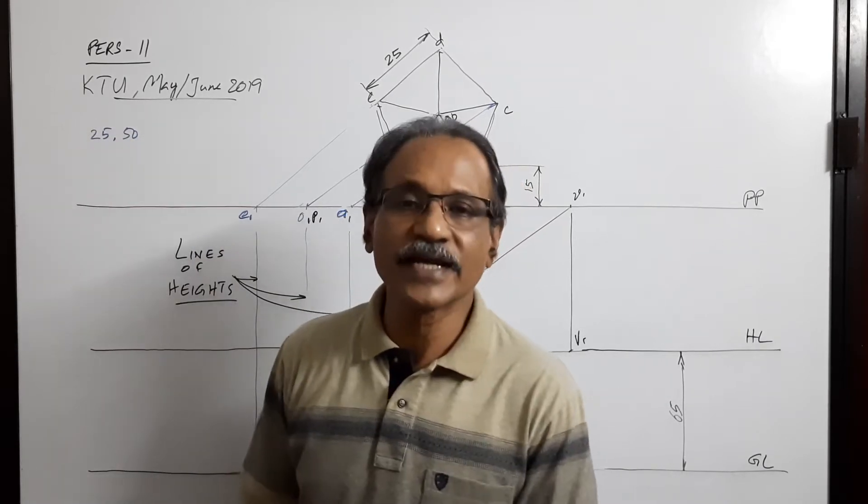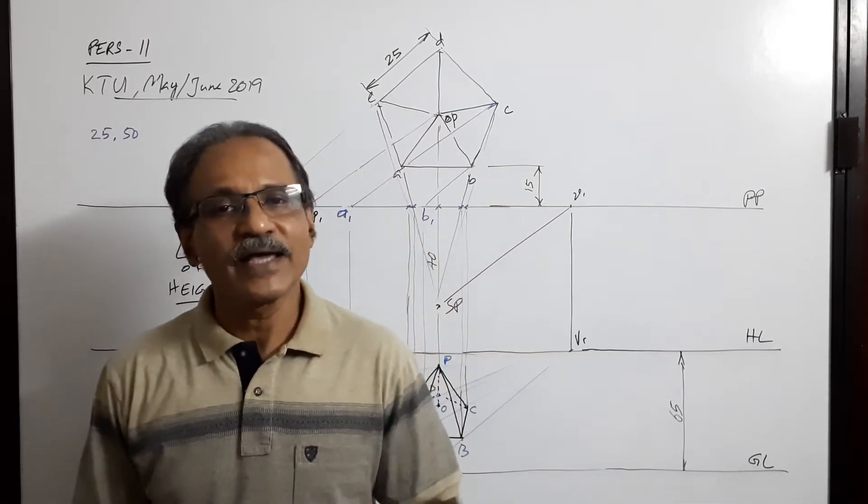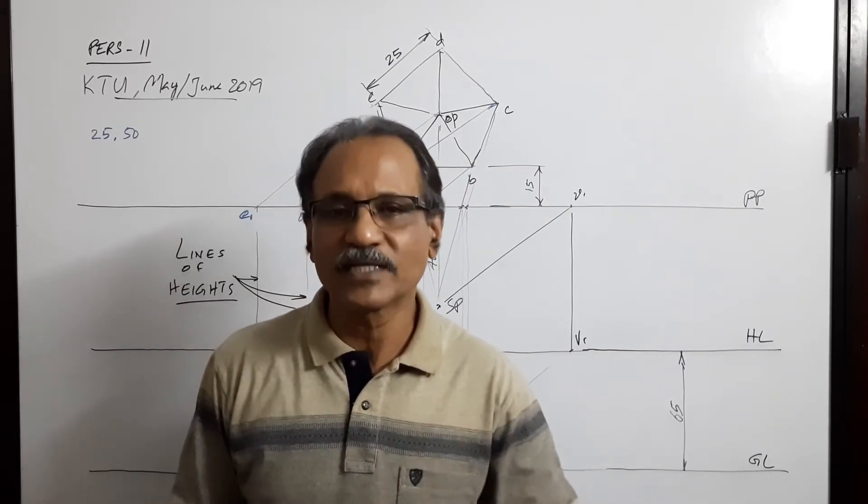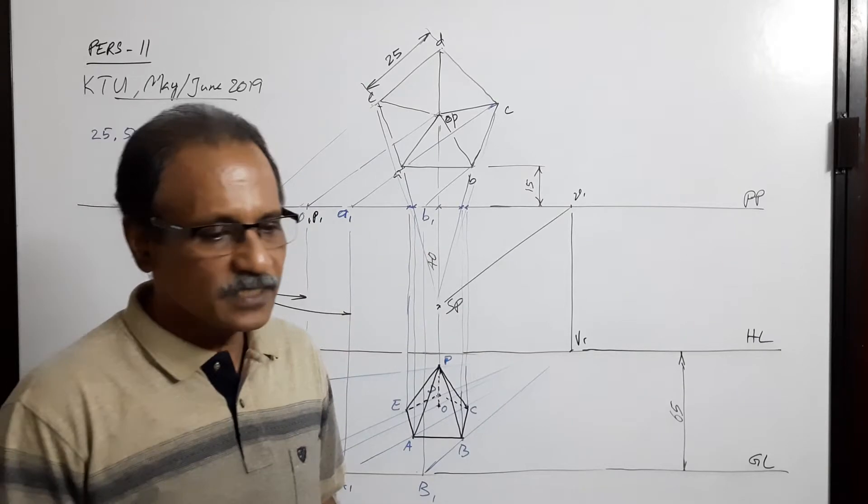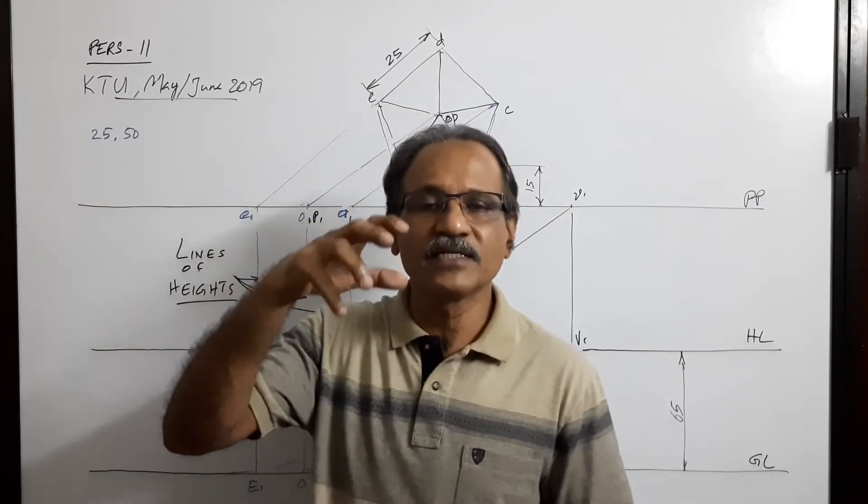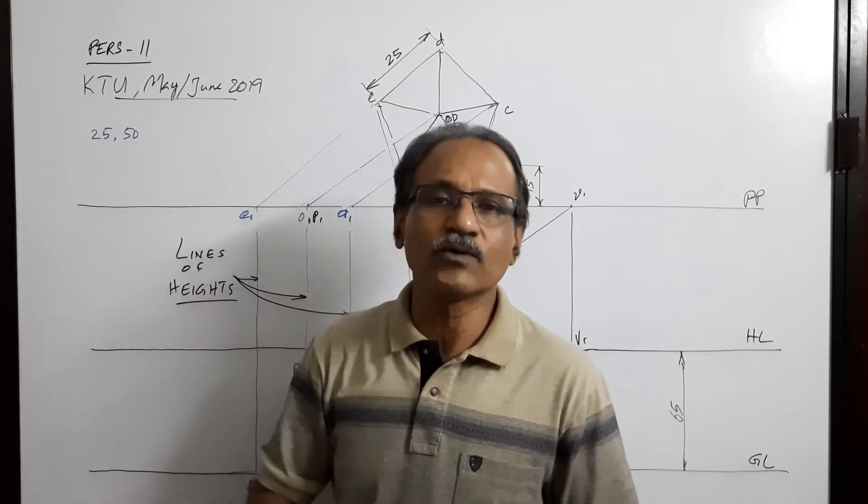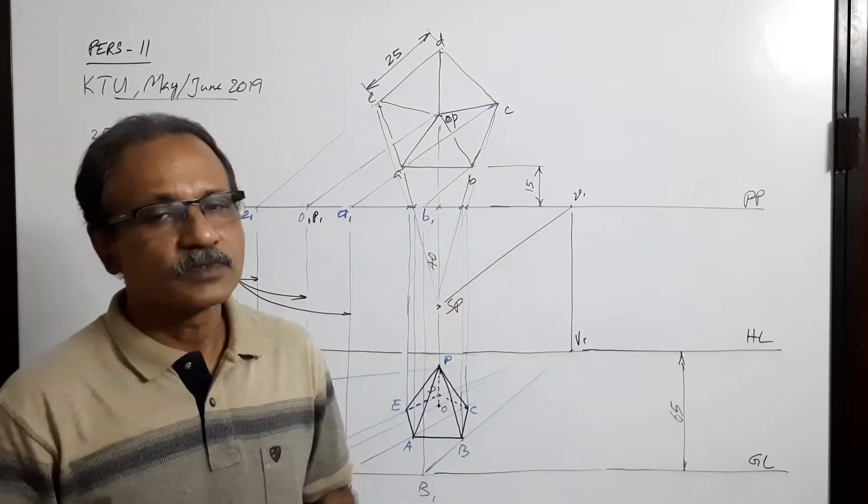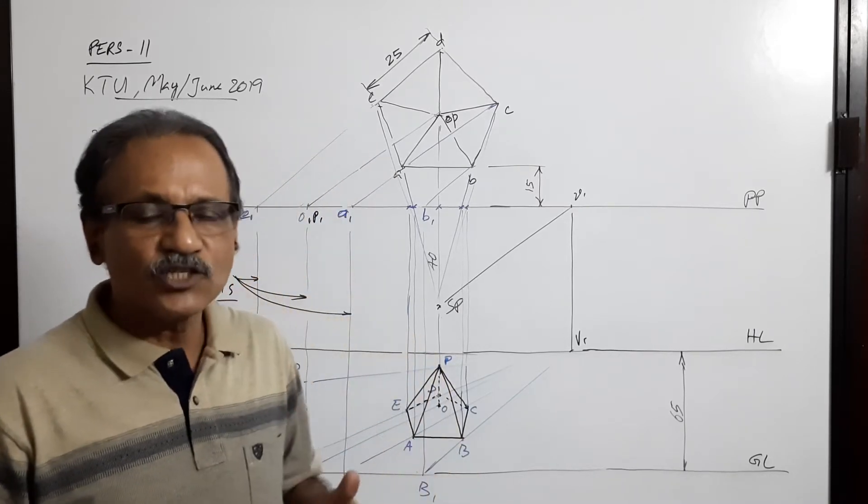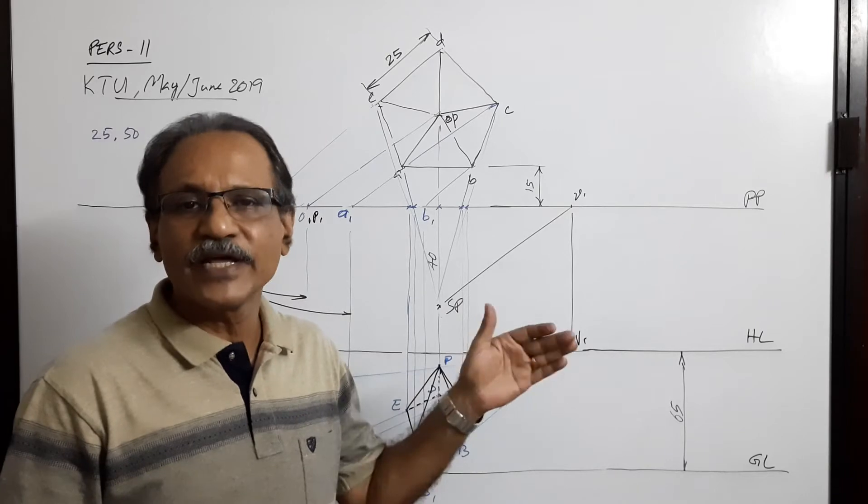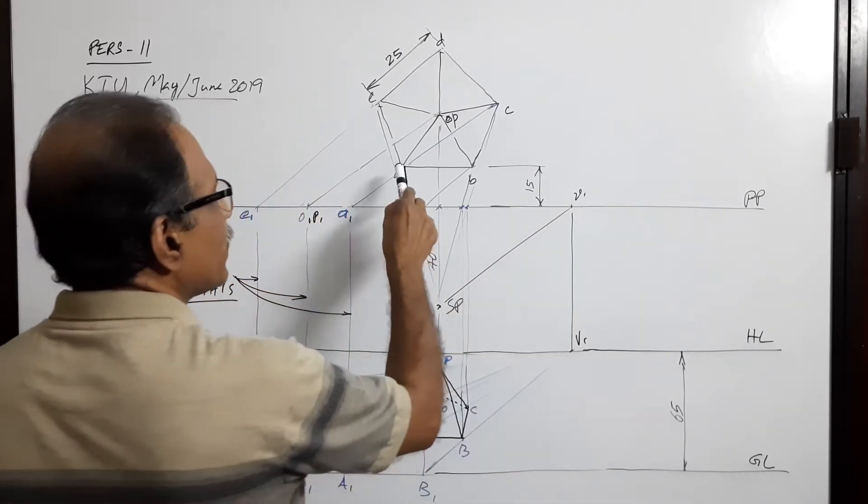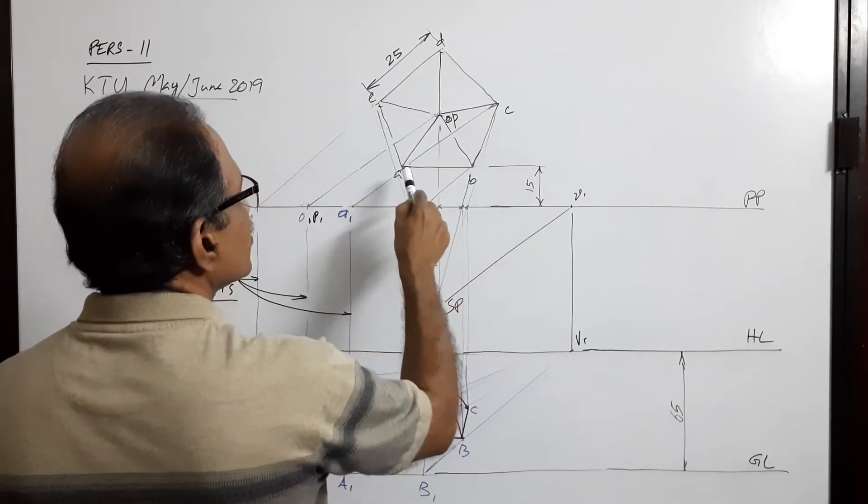The question is: a pentagonal pyramid, 25mm side, 50mm height, is resting on its base on the ground. The pentagonal pyramid is resting on its base on the ground with an edge of base parallel to PP and 15mm behind PP.